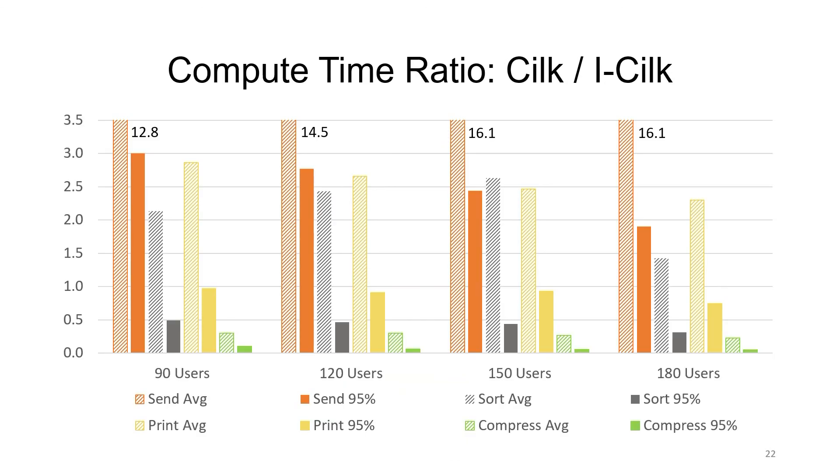We collected timing data for the send, sort, print, and compress tasks for both a baseline version of Cilk that supports futures and for the new iCilk scheduler that approximates promptness. We divided the time it took for each computation in the baseline by the time it took for each computation in iCilk, and thus higher values are better. We ran the application with 90, 120, 150, and 180 simulated users. The striped bars show a comparison of the average time for each task, and the solid bars show the 95th percentile comparison. The bars are ordered from highest to lowest priority for each configuration. The average values for the send task are out of bounds, and so we display a number next to their bars to show their values. As we can see, the scheduler appropriately prioritizes the highest priority send tasks and generally does better on the sort tasks at the expense of the lower priority tasks. Our other case studies in the paper show similar conclusions.